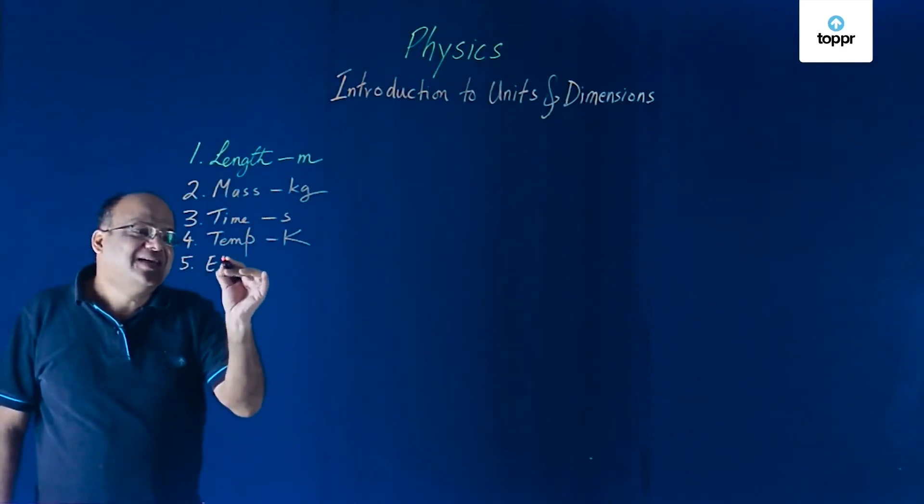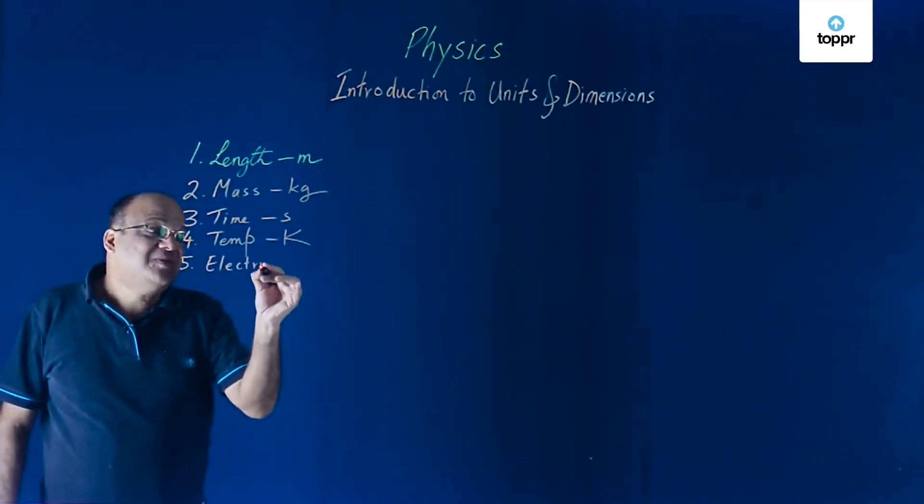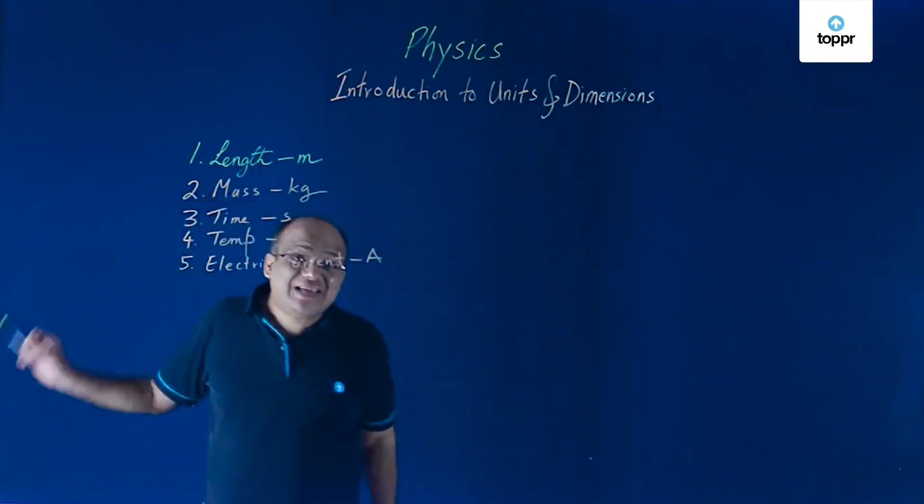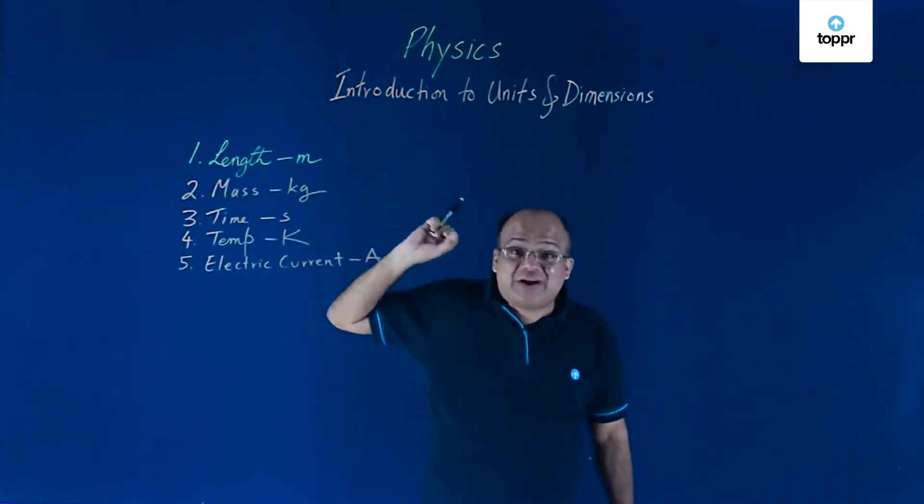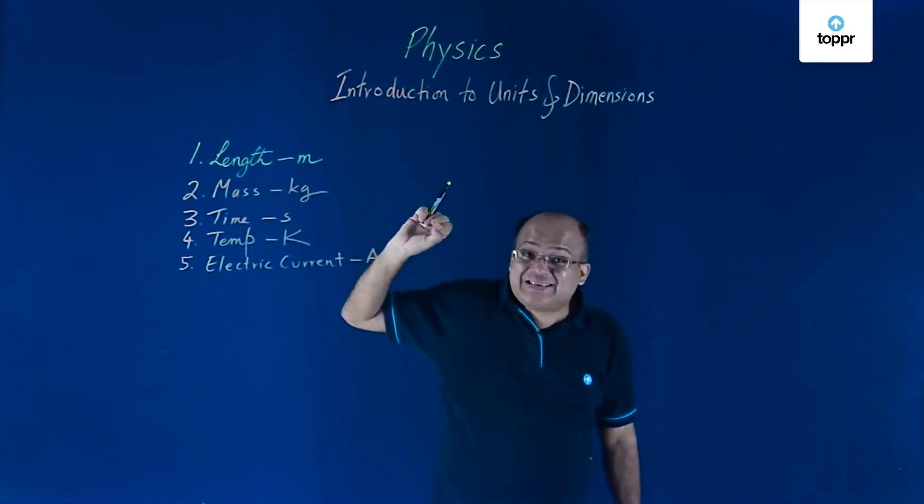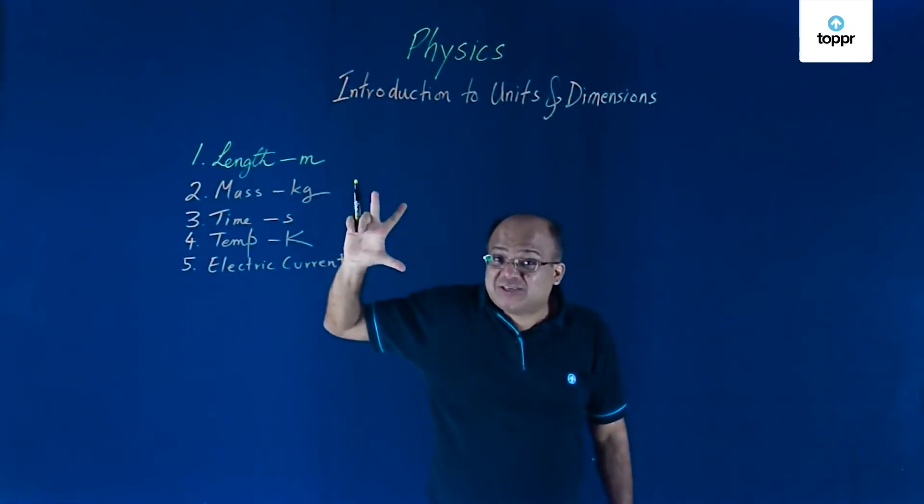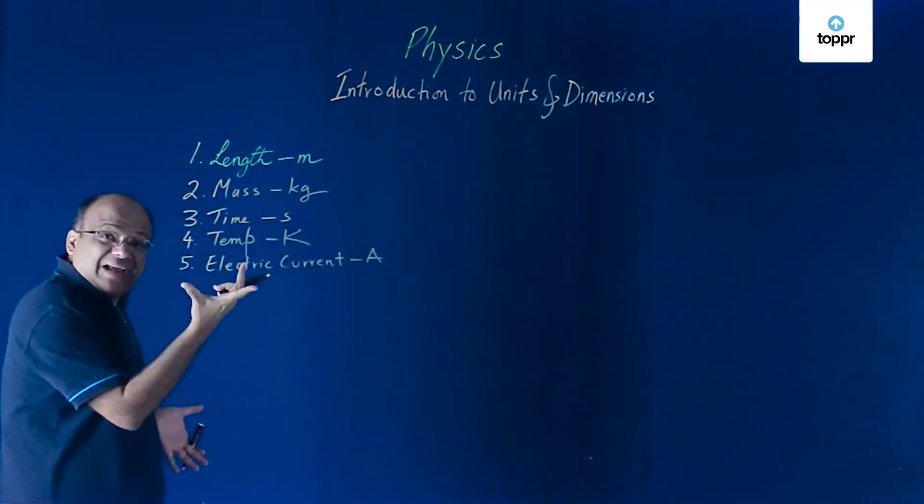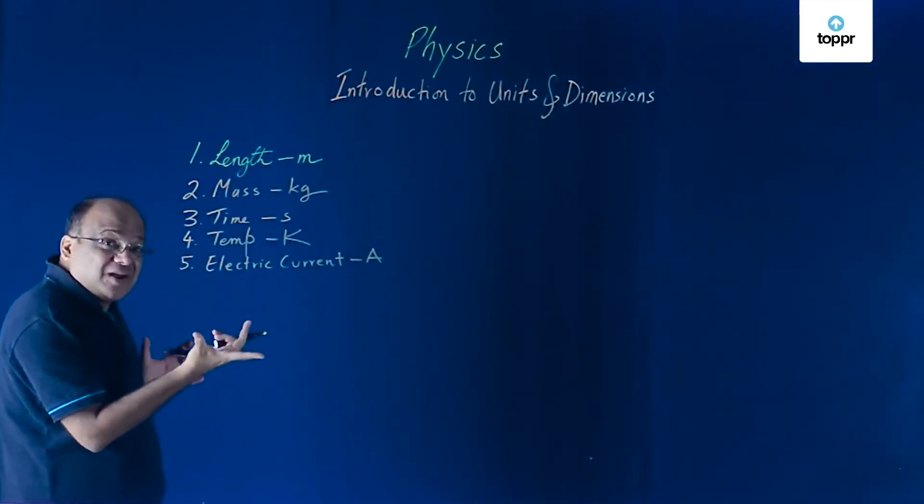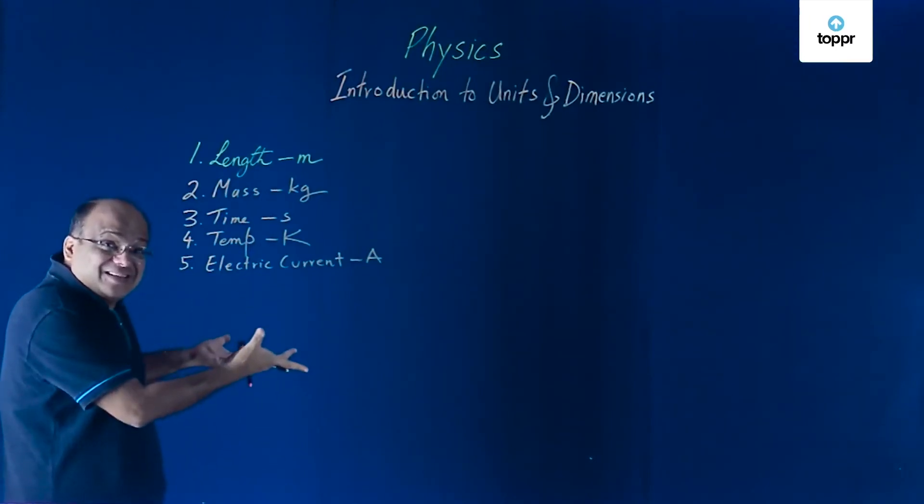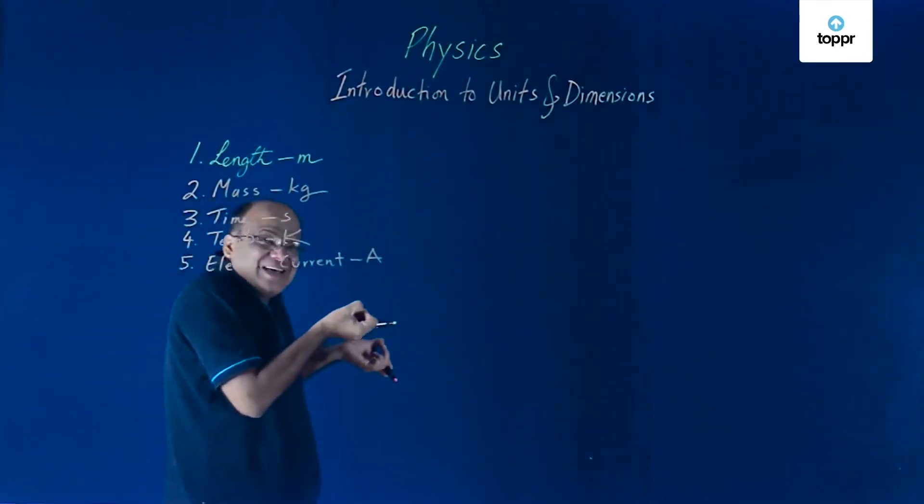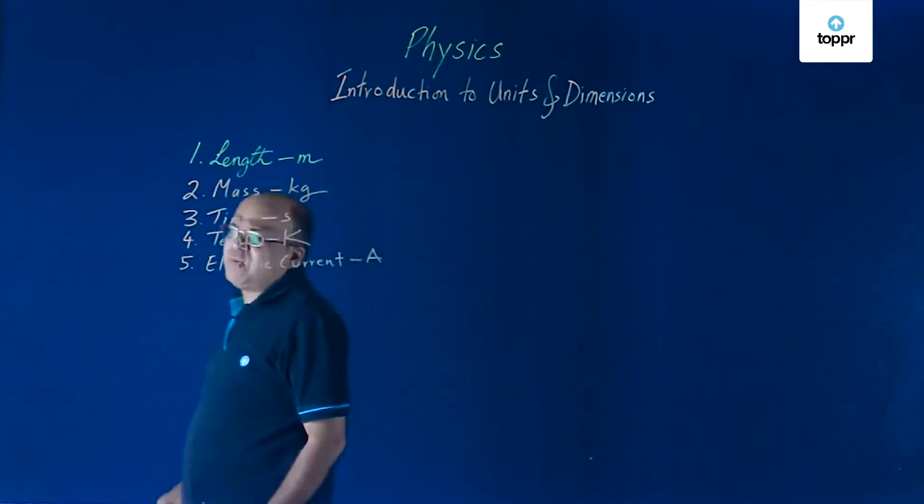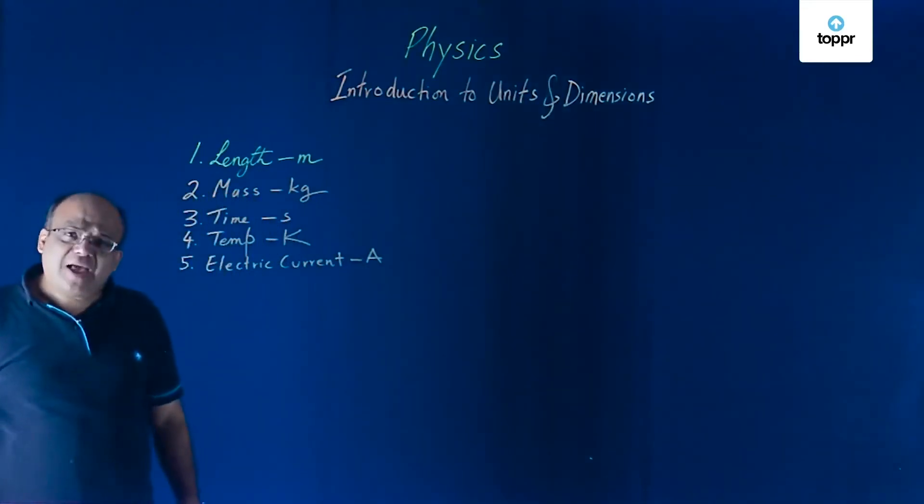Electric current, electric current we measure in ampere. Remember in SI, the fundamental quantity is electric current, not charge. Charge appears to be more fundamental in nature but we define electric current as a fundamental quantity because we can measure current easily. We cannot measure charge easily. Current into time will give us charge. So electric current is a fundamental quantity in SI, unit is ampere.